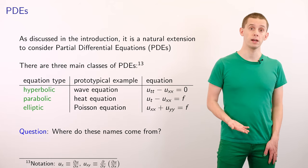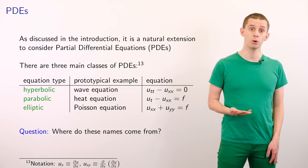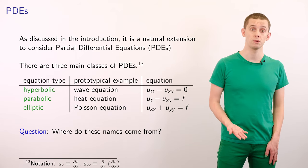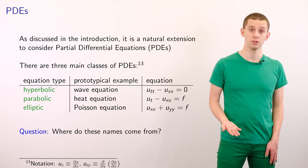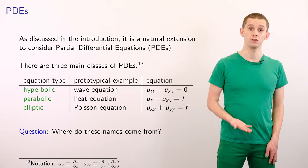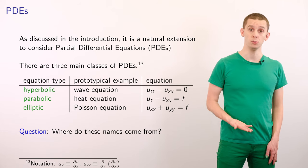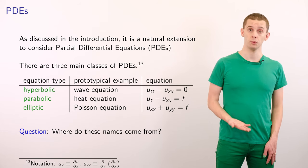The second class are parabolic PDEs, and here, a prototypical example is the heat equation. And again, we would solve for a solution u of t and x, and it will satisfy u_t minus u_xx is equal to f, where f is now a source term.